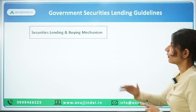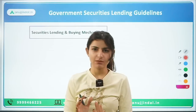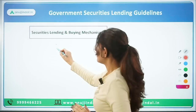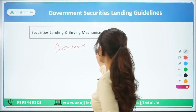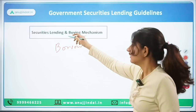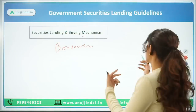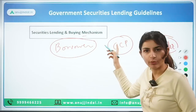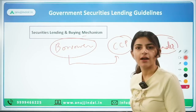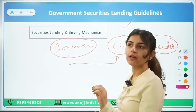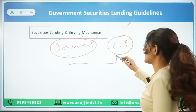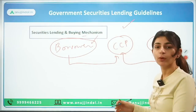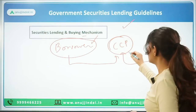The first topic is the securities lending and borrowing mechanism. Three parties are involved: the borrower, the lender, and a central counterparty or clearing corporation. The clearing corporation ensures the transaction is safe — that the borrower is authentic, that the borrower will pay back, and that the borrower has given collateral. This is what the clearing corporation does.